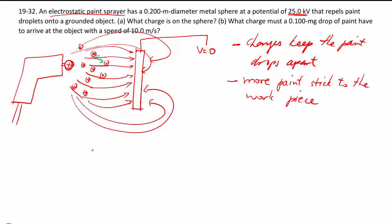So you're not just spraying flecks of paint all over the room. More of it gets on the work piece, which ultimately gives you a more uniform paint job while using less paint. That's the whole idea of the electrostatic paint sprayer.